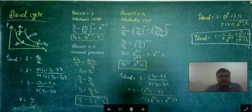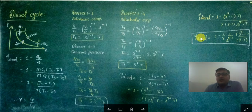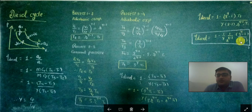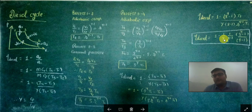Hello friends, today we are going to learn about diesel cycle efficiency. What we are going to derive is: η = 1 − (1/γ) · (ρ^γ − 1)/(ρ − 1) · (1/r^(γ−1)), which is the air standard diesel cycle efficiency, where γ is the adiabatic index, also equivalent to cp divided by cv, r is the compression ratio v1/v2, and ρ is the cutoff ratio v3/v2.